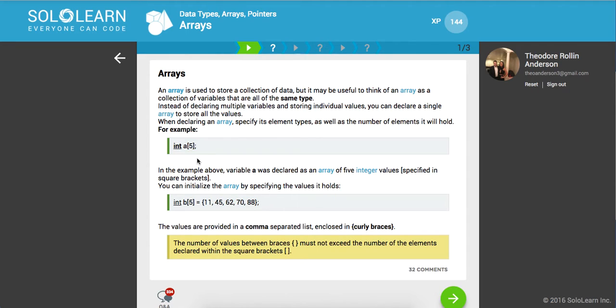Instead of declaring multiple variables and storing individual values, you can declare a single array to store all the values. When declaring an array, specify its element type as well as the number of elements it will hold.